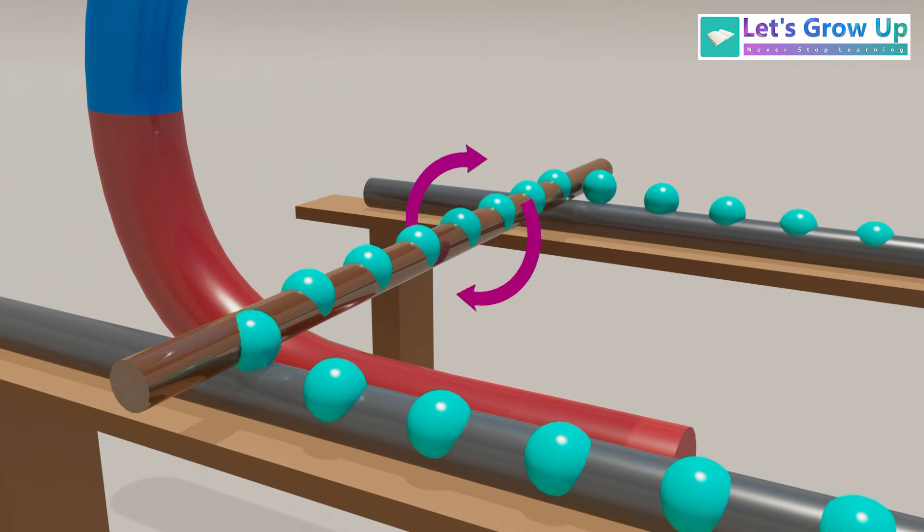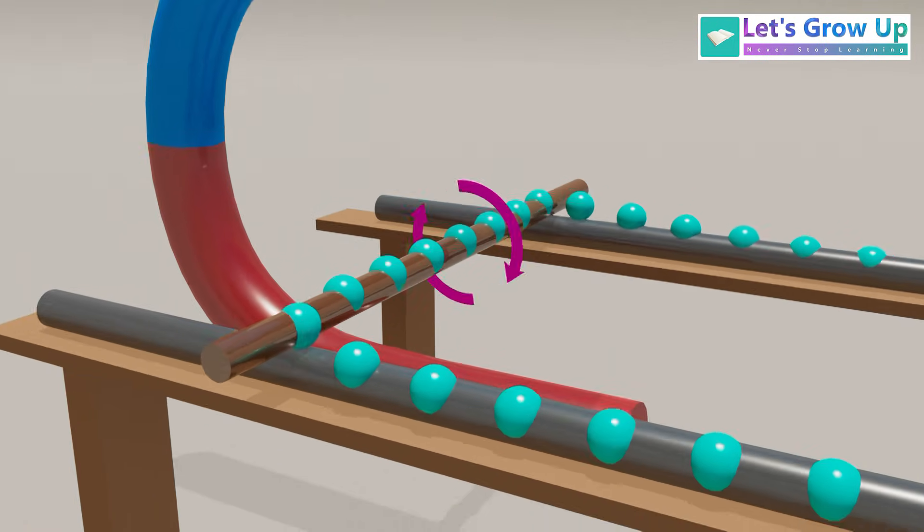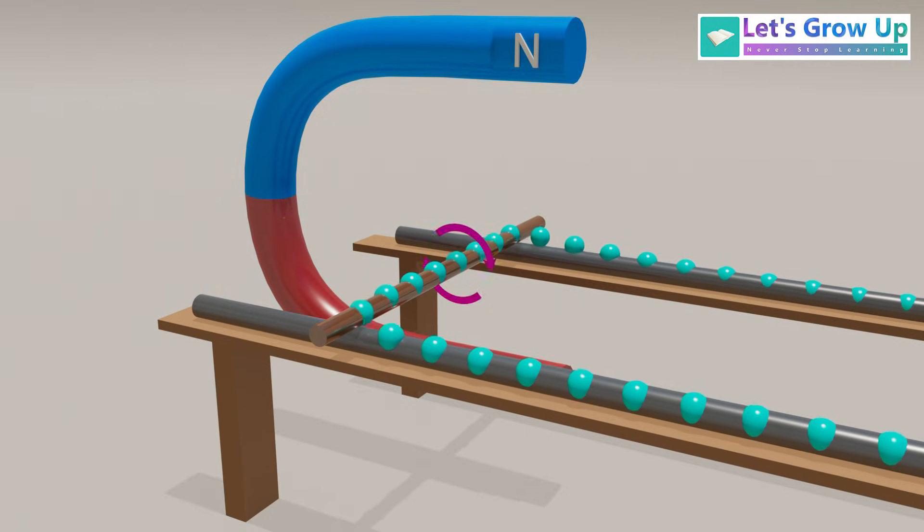This magnetic field interacts with the magnetic field from the permanent magnets resulting in a mechanical force on the wire. This force will cause the wire to move.